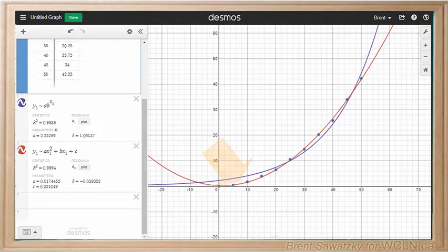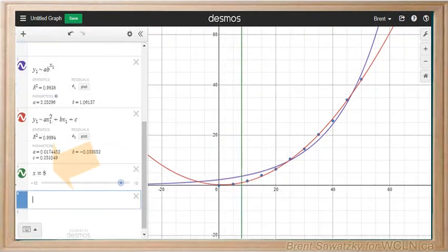Or to be a little faster we could enter an additional equation that is x equals 8 and there's a line. And now that makes zeroing in on our point a little faster in that Desmos will identify the intercept here much more quickly.